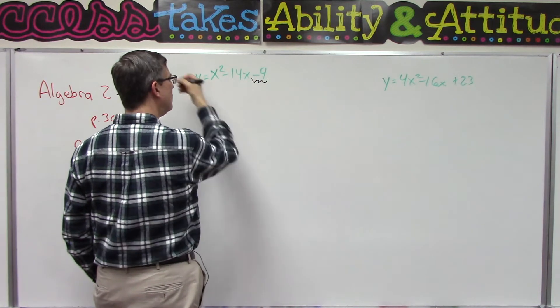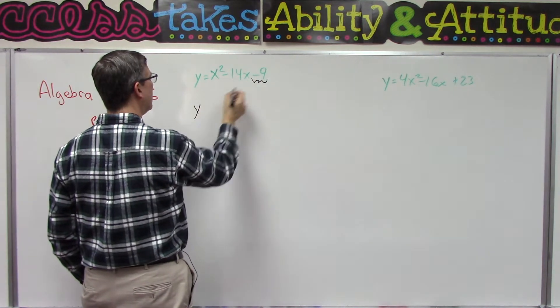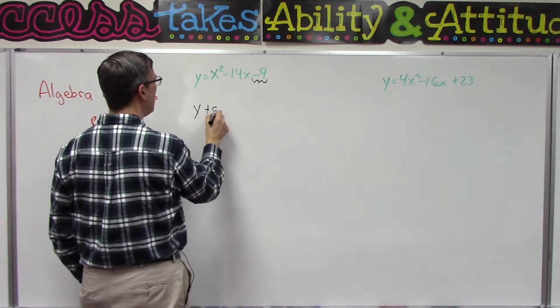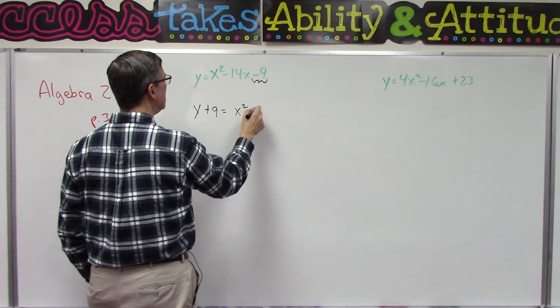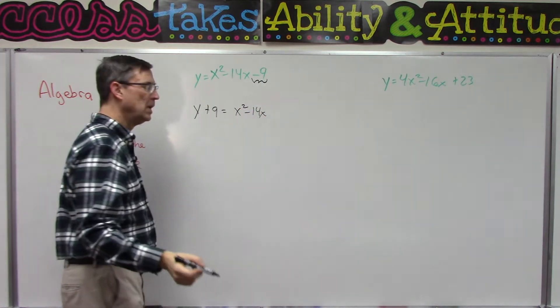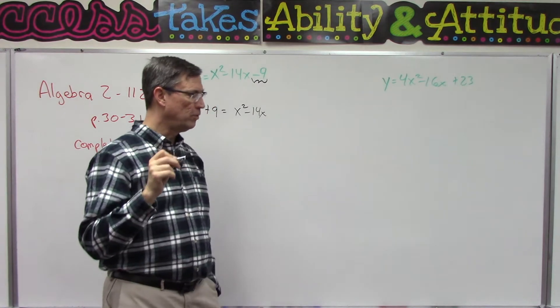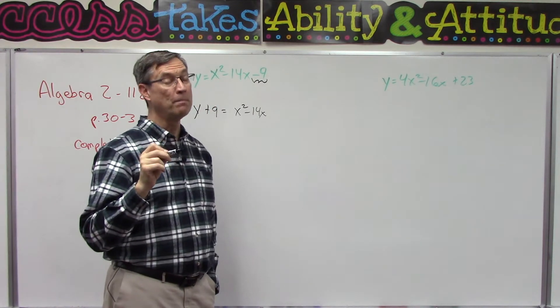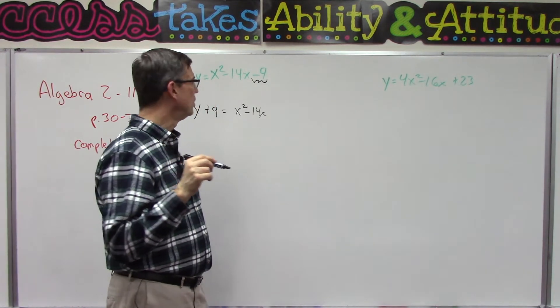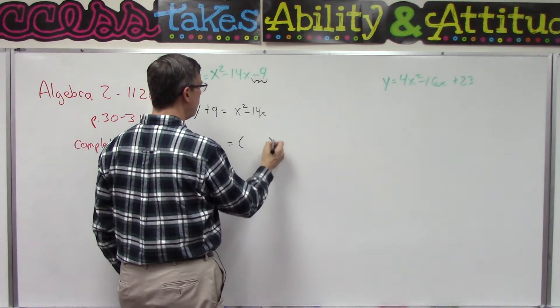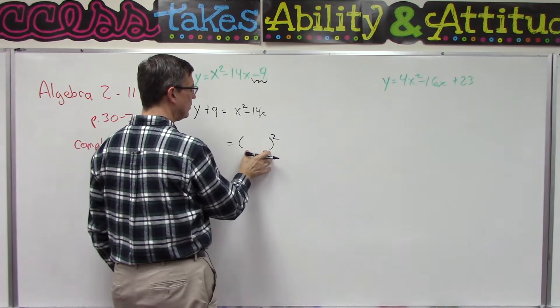When you change sides, you change signs. We get y plus 9 equals x squared minus 14x. Now, follow through here, because this is a very important step. This is where we actually get the term 'completing the square.' We're trying to come up with a quantity squared.